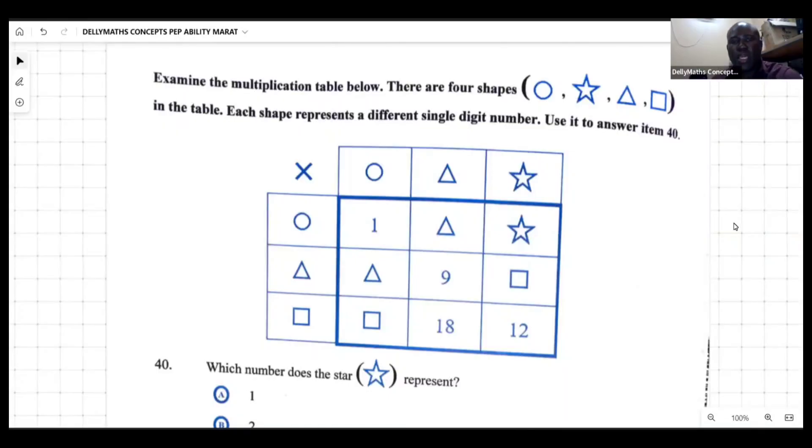We're going to be looking at this question here for the PEP ability. The question says examine the multiplication table below. There are four shapes: we have a circle, we have a star, we have a triangle, and a square in the table. Each shape represents a different single digit number. Use it to answer item 40.